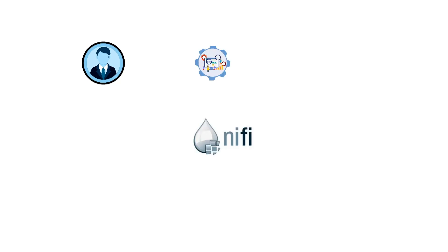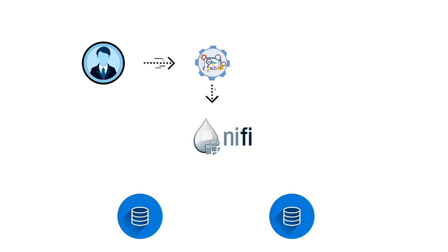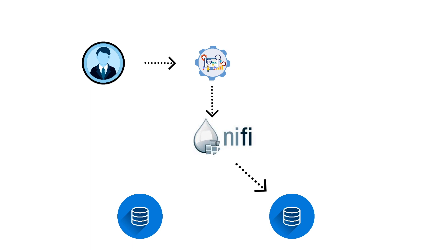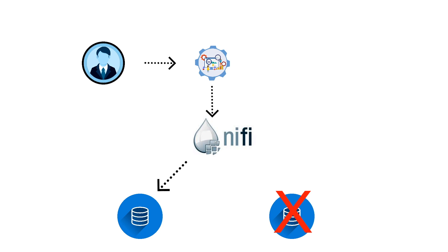Our user has an application that relies on NiFi to communicate with its backend. At any point in time, one of the databases goes offline, and we want to have the ability to switch to the other available databases. So how do we do this? Let's build a flow for this scenario.